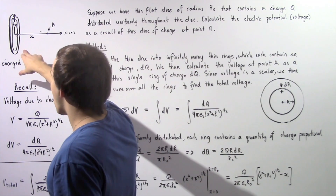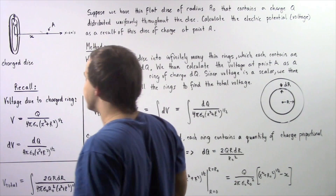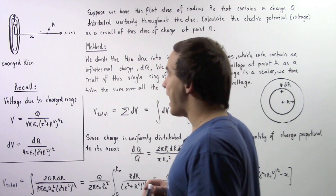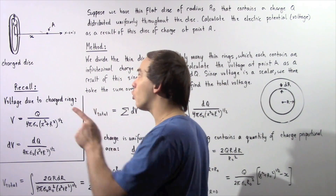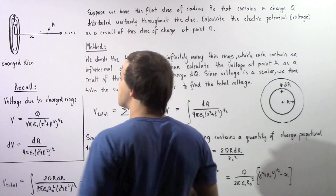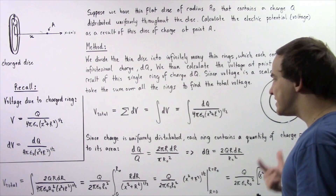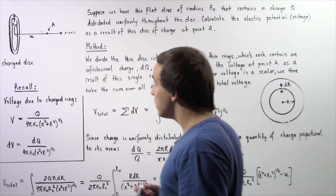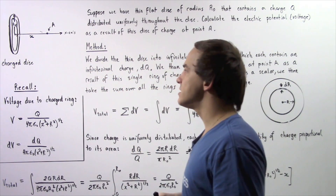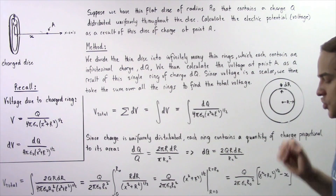We have our disk of charge that has a radius given by R0. Our point A lies on the x-axis and is found a horizontal distance x away from the center of our disk of charge. So how exactly are we going to go about calculating the voltage at point A as a result of our flat thin disk of charge?